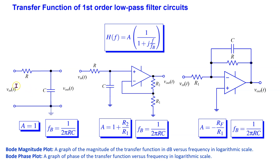For passive low pass filter circuits, the gain is 1 since passive components cannot amplify the circuit. For active low pass filters, the gain can be set by choosing the resistor values. The break frequency is set by the values of R and C.